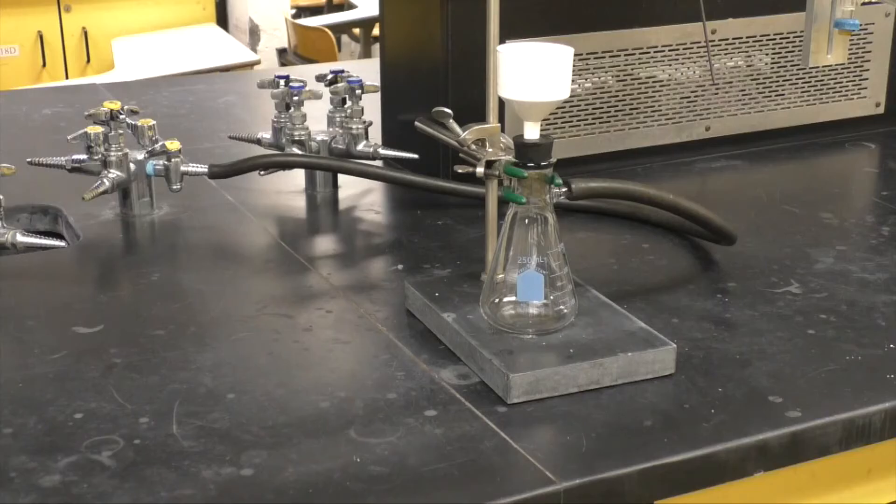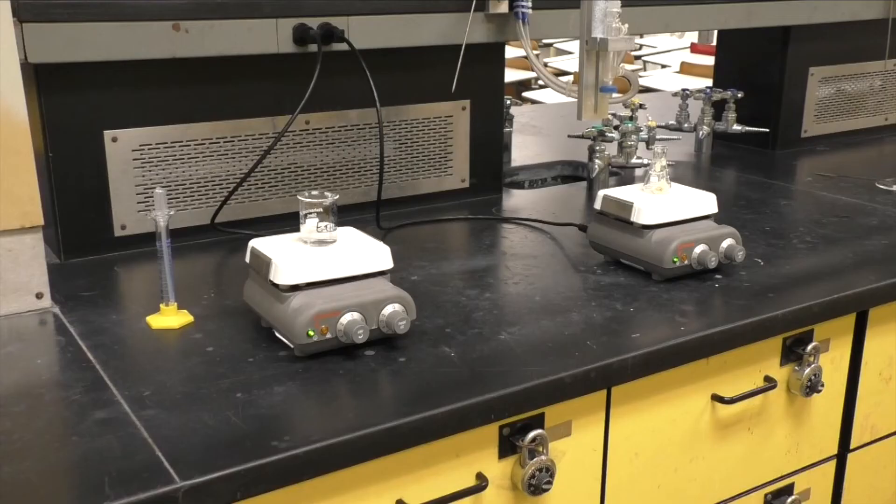Clean a Buchner funnel, rinse with acetone and let it dry. Set up a suction filtration apparatus and gather two clean 25 milliliter Erlenmeyer flasks, a stir bar, and two hot plate stirrers.